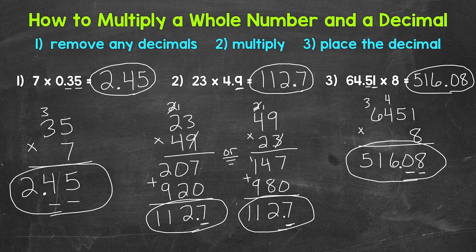For number two, 23 times four and nine tenths equals 112 and seven tenths. I worked this out two different ways so you can check your work — 23 on top, or if you had 49 on top. Both numbers are two digits, but if you like putting the greater number on top, that would be 49 in this case. Either way will work. And then lastly, moving on to number three: 64 and 51 hundredths times eight equals 516 and eight hundredths.